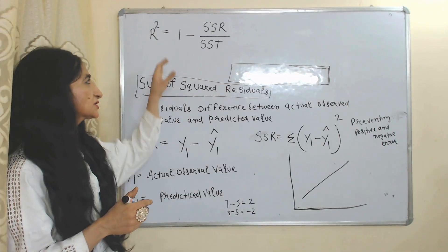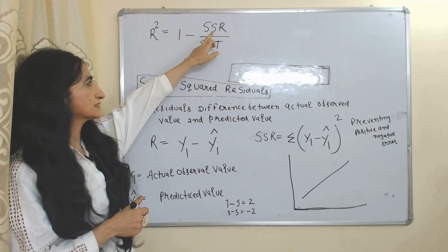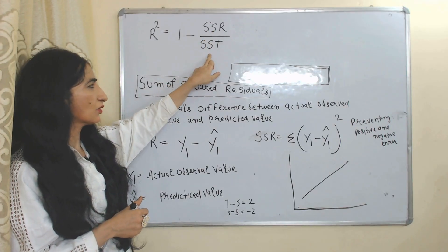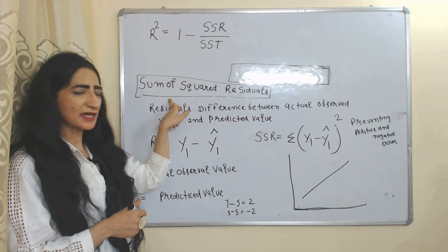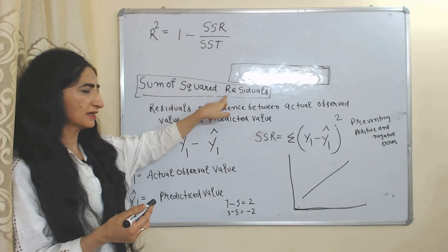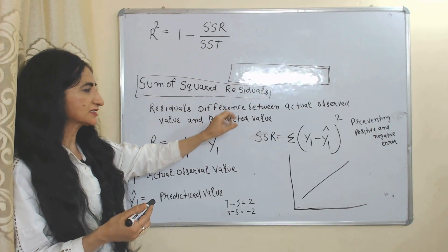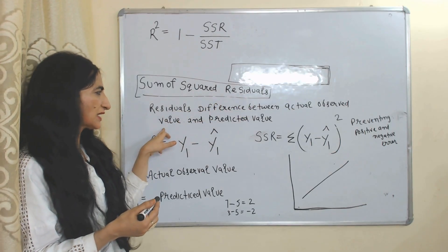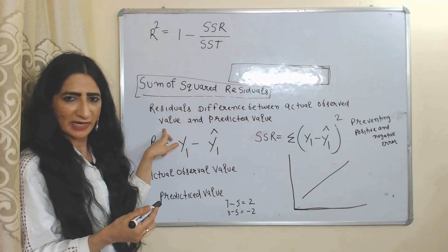This is the formula to calculate R-squared: 1 minus SSR over SST. SSR represents the sum of squared residuals. Residuals means the difference between the actual observed value and the predicted value.